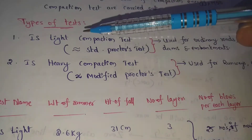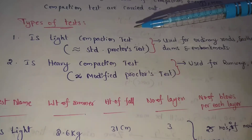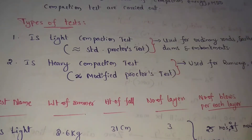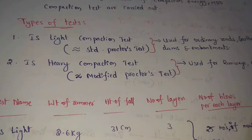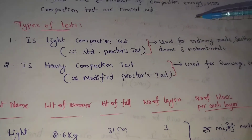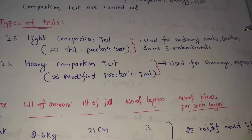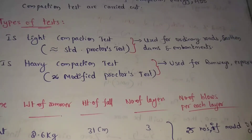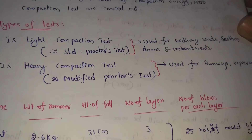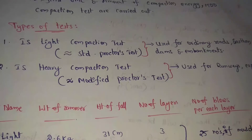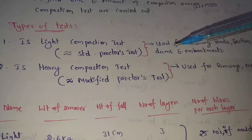The first one is the IS Light Compaction Test. It is similar to the Standard Proctor Test. This test is used for ordinary roads, earthen dams, and embankments.